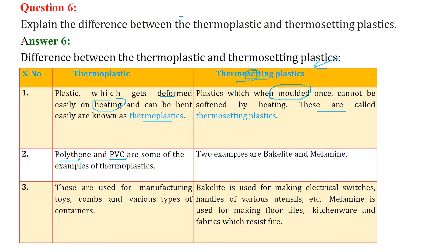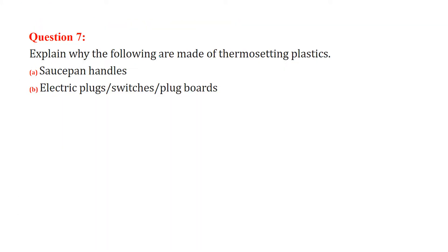Examples of thermoplastics are polythene and PVC (polyvinyl chloride). Examples of thermosetting plastics are bakelite and melamine. Thermoplastics are used for manufacturing toys, combs, and various types of containers. Bakelite is used for making electrical switches and handles of utensils, while melamine is used for making floor tiles, kitchenware, and fabrics that resist fire.